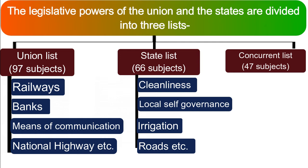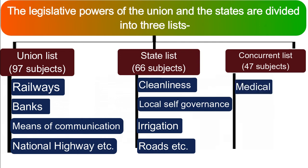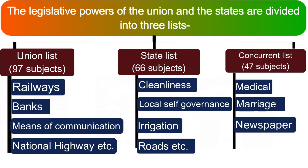Concurrent list has 47 subjects and some important subjects are medical, marriage, newspaper, and electricity.